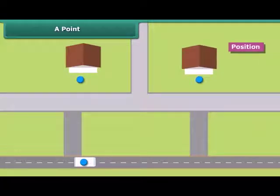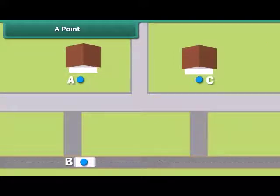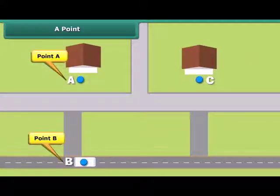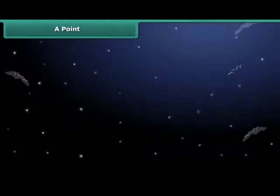A point is labeled with capital letters like A, B, C. These points are read as point A, point B and point C. A natural example of a point is a star in the night sky.